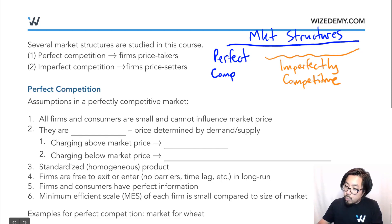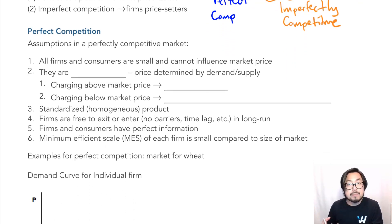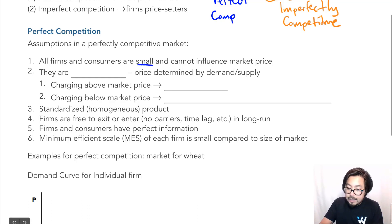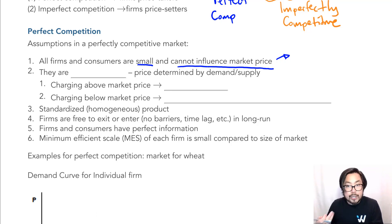So what does it mean for a market to be perfectly competitive? In order for a market to be perfectly competitive, a market must have certain characteristics, listed here as assumptions. The first characteristic: all firms and consumers in a perfectly competitive market are small and they cannot influence the market price. Because all consumers and producers are so small, they have no market power.